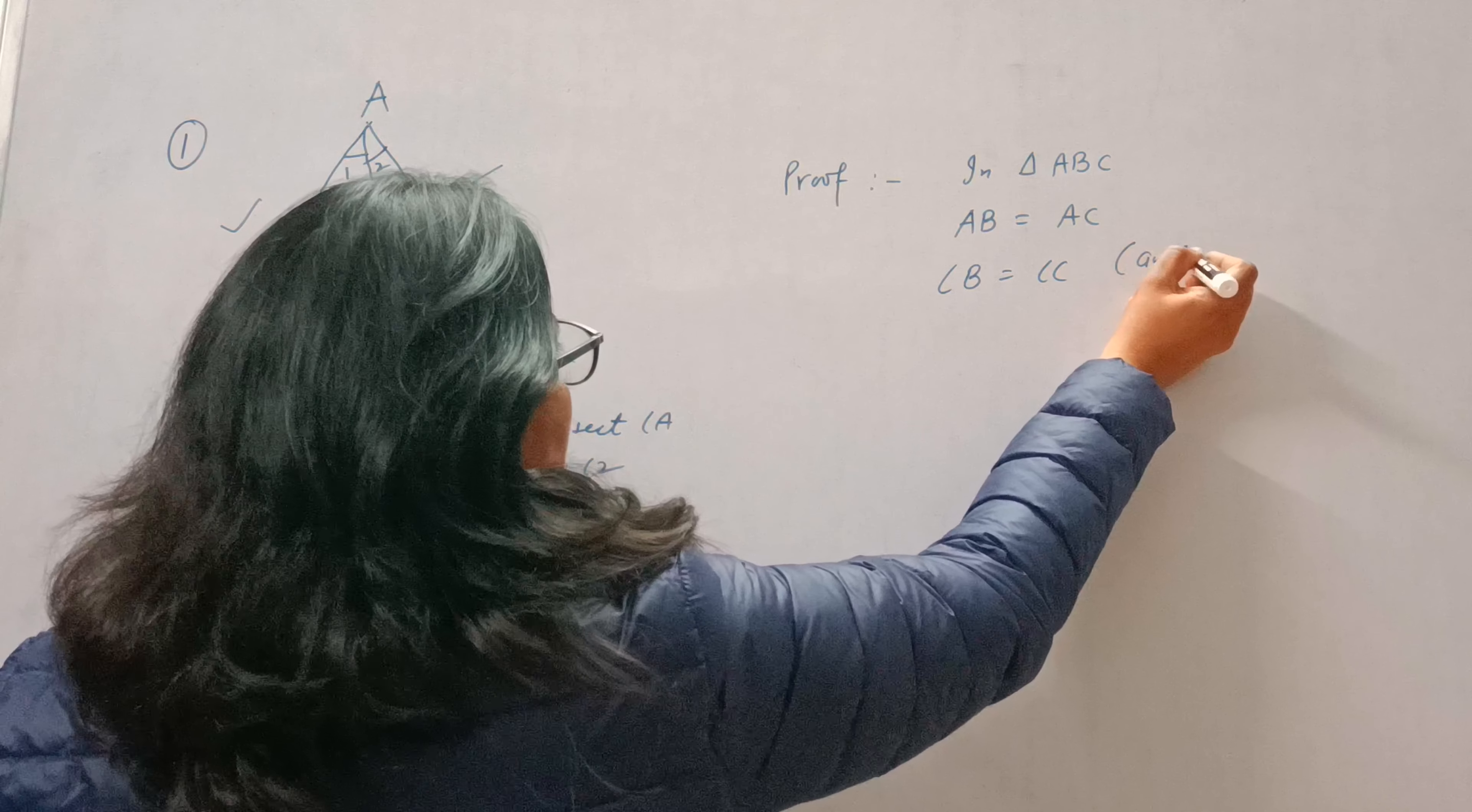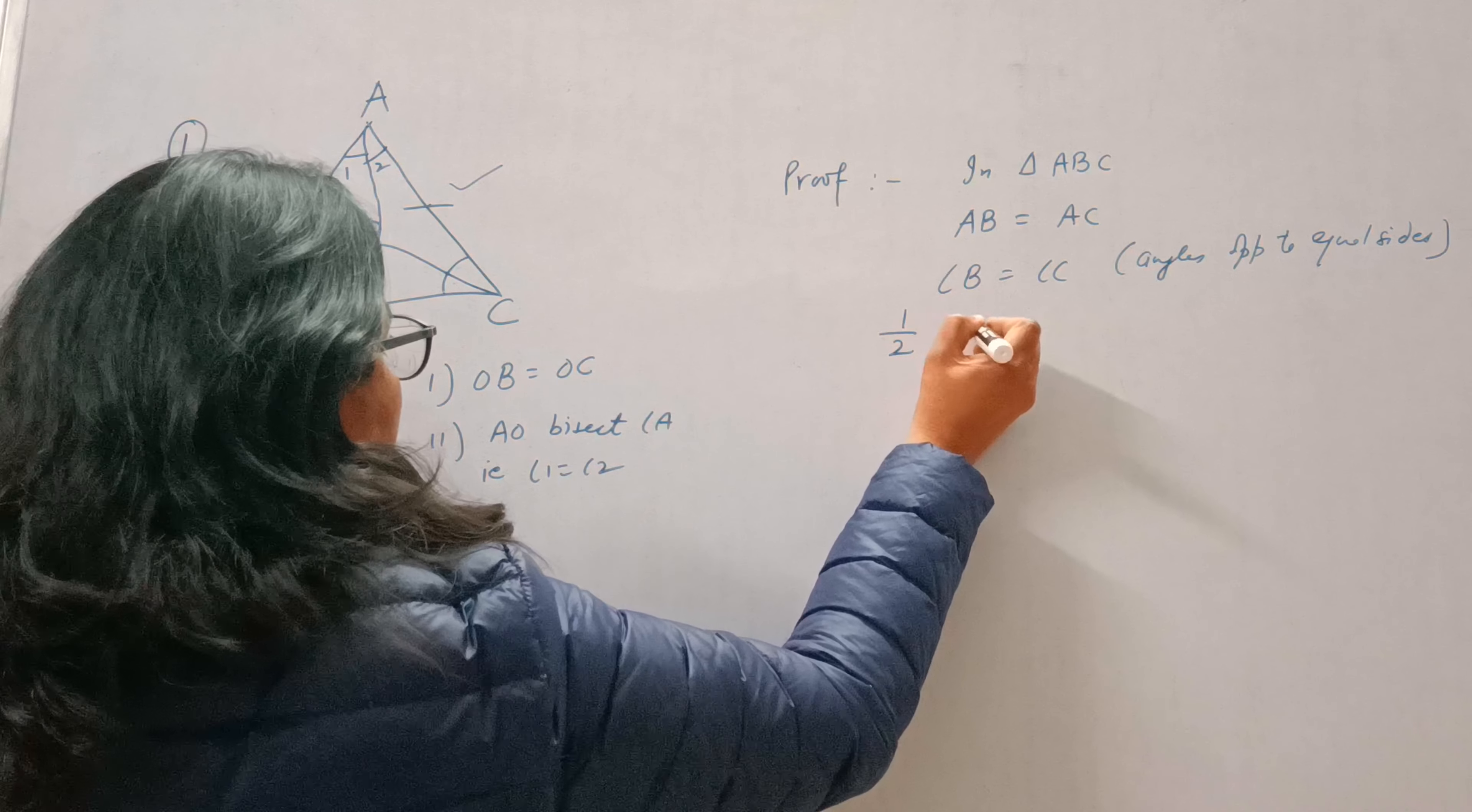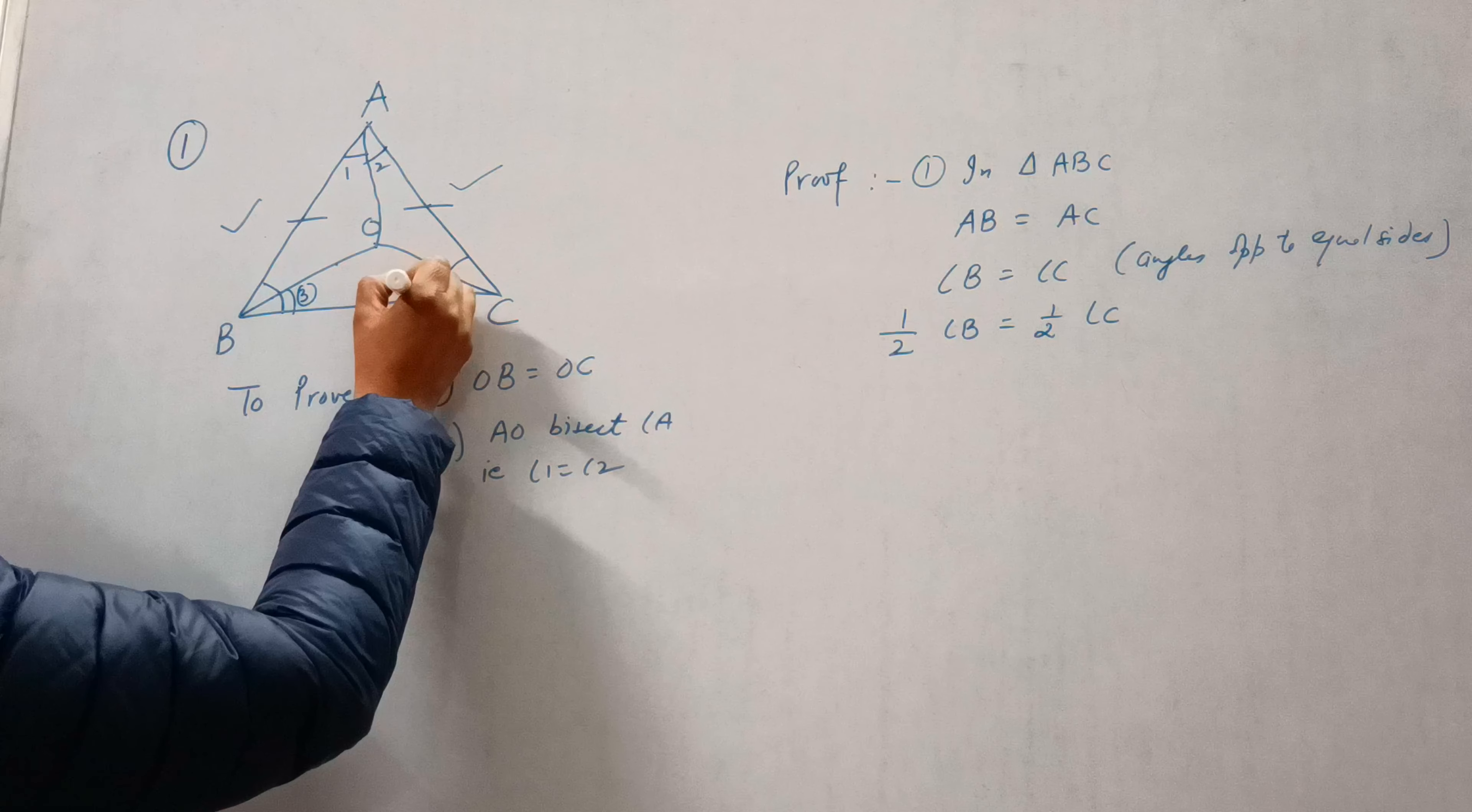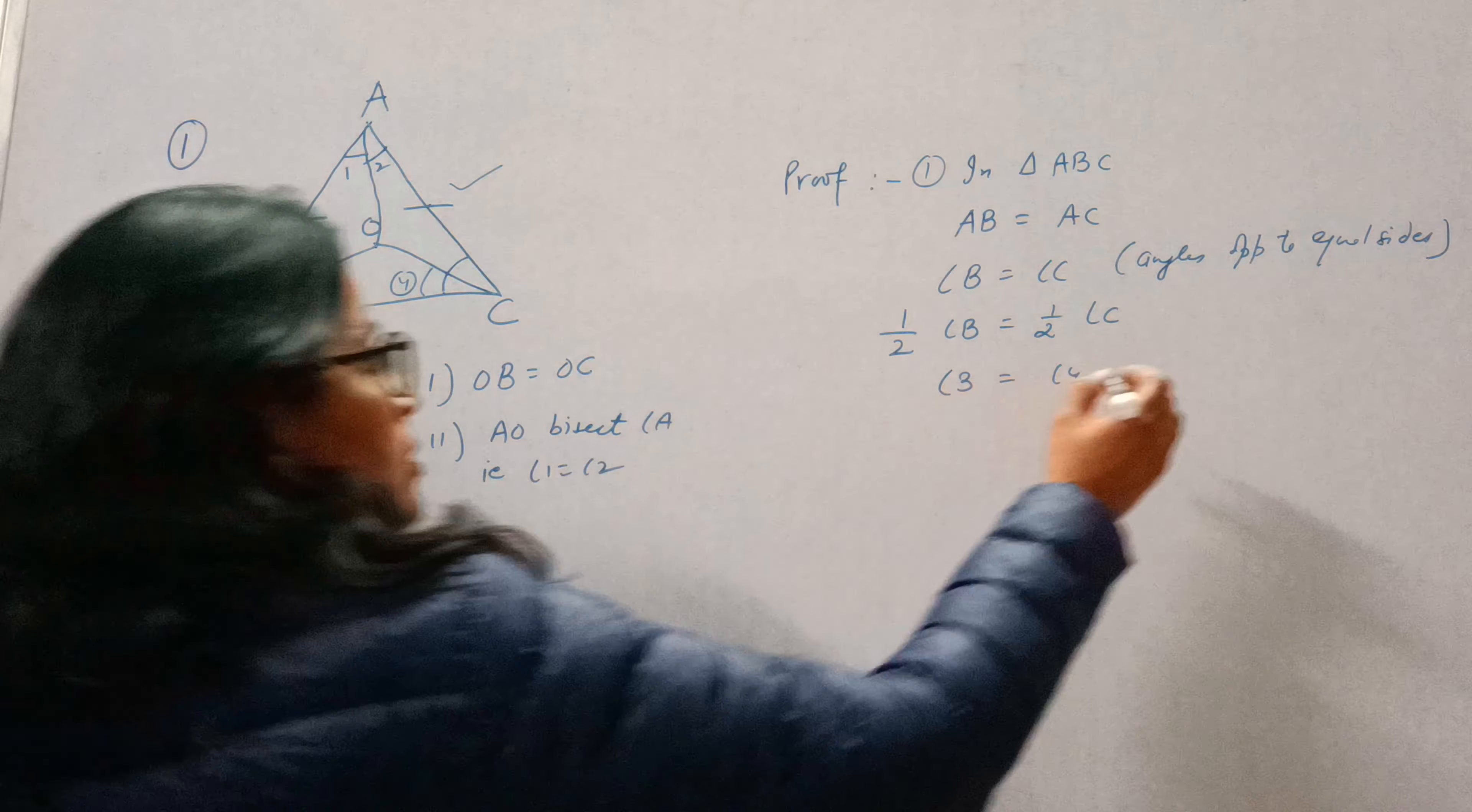Angles opposite to equal sides are equal. And if the complete angle is equal, half of angle B will be equal to half of angle C. Half of angle B is angle 3, and this is angle 4. So angle 3 equals angle 4. Why? Because OB and OC are bisectors.